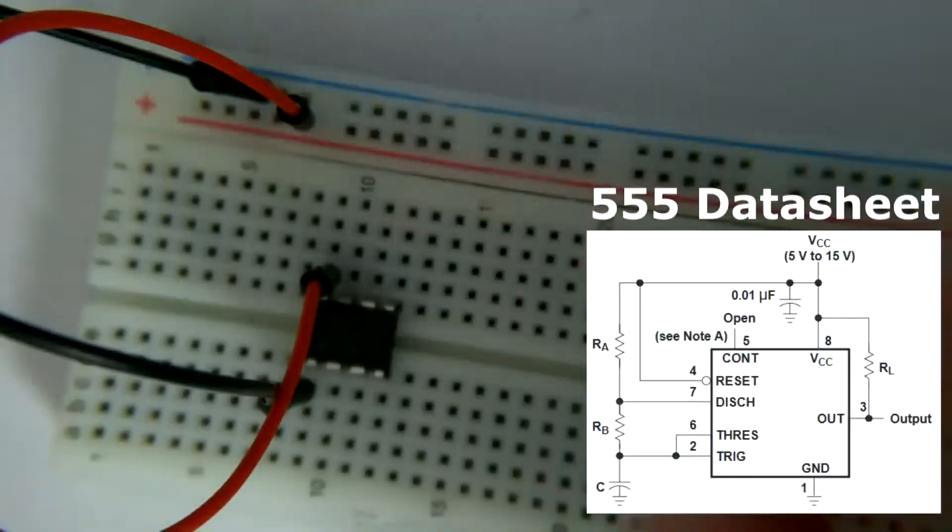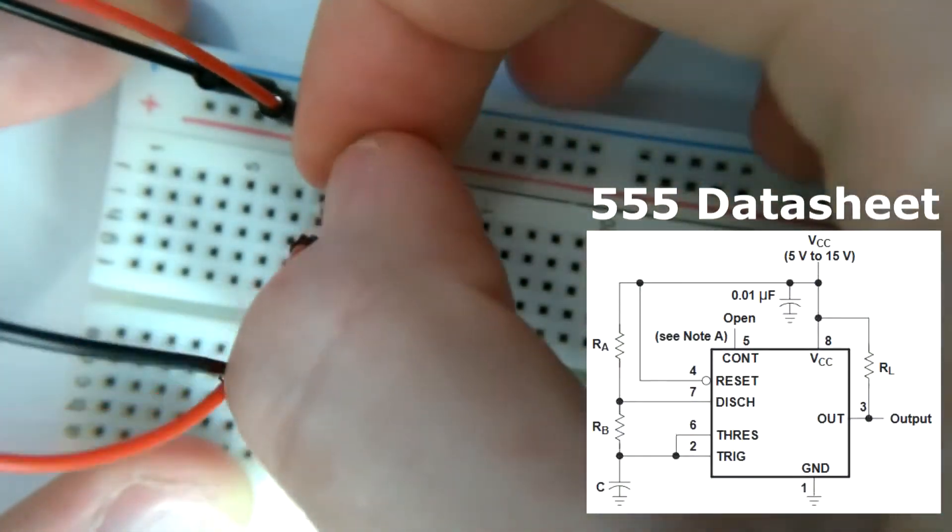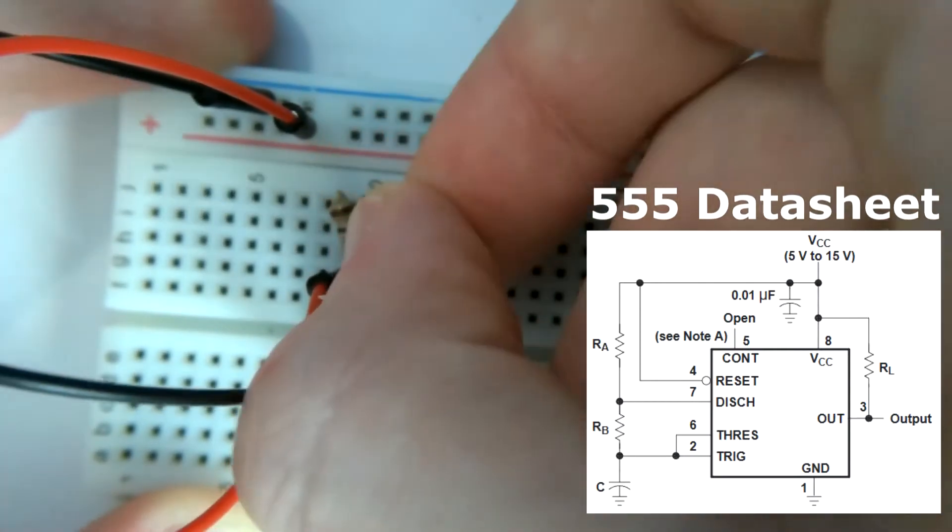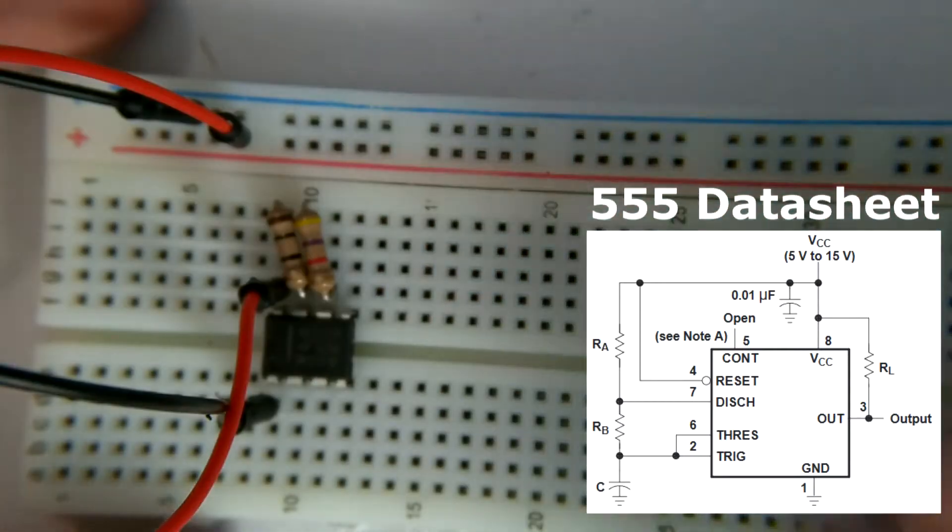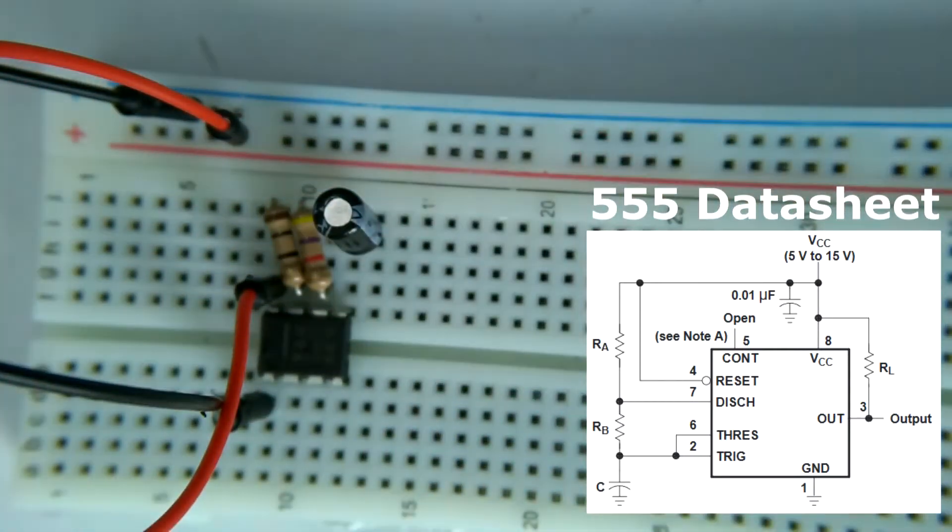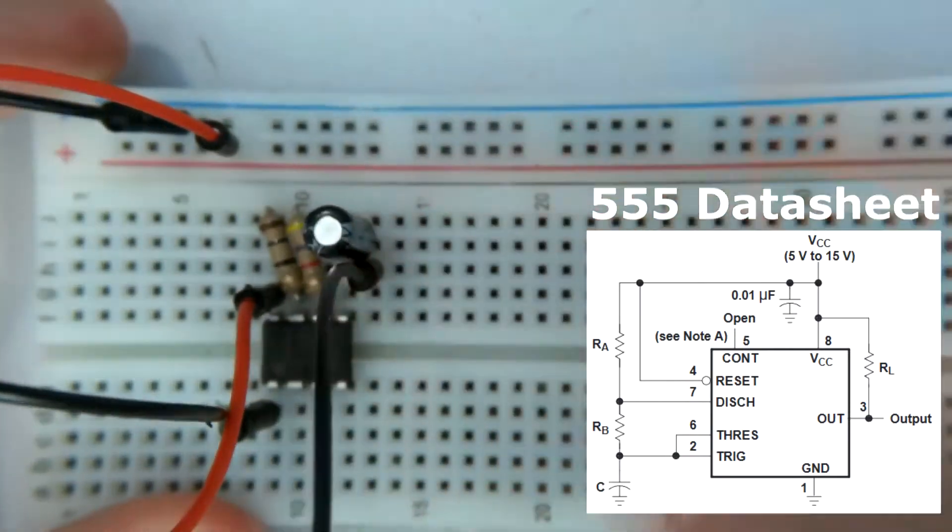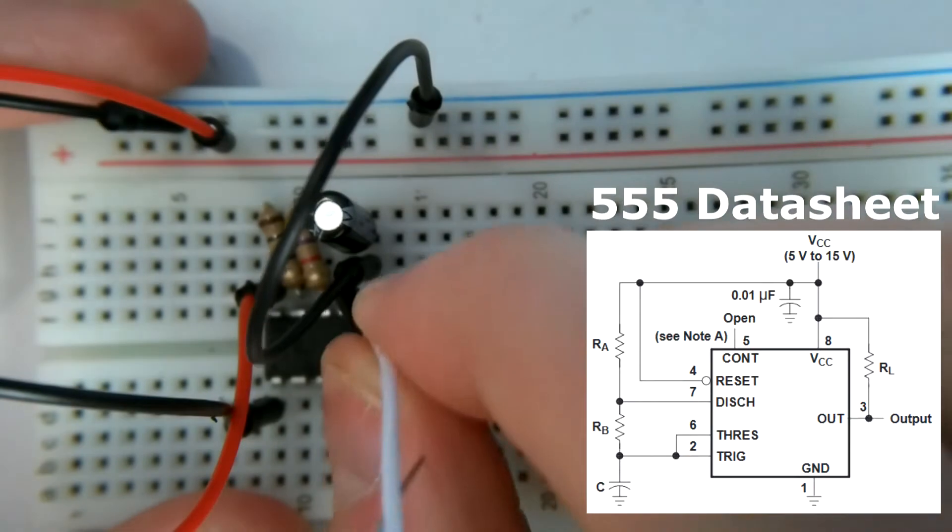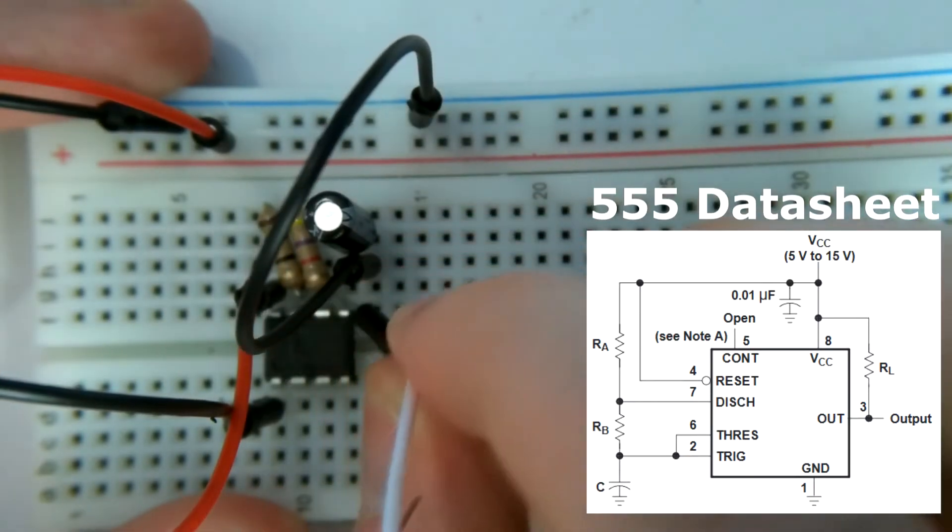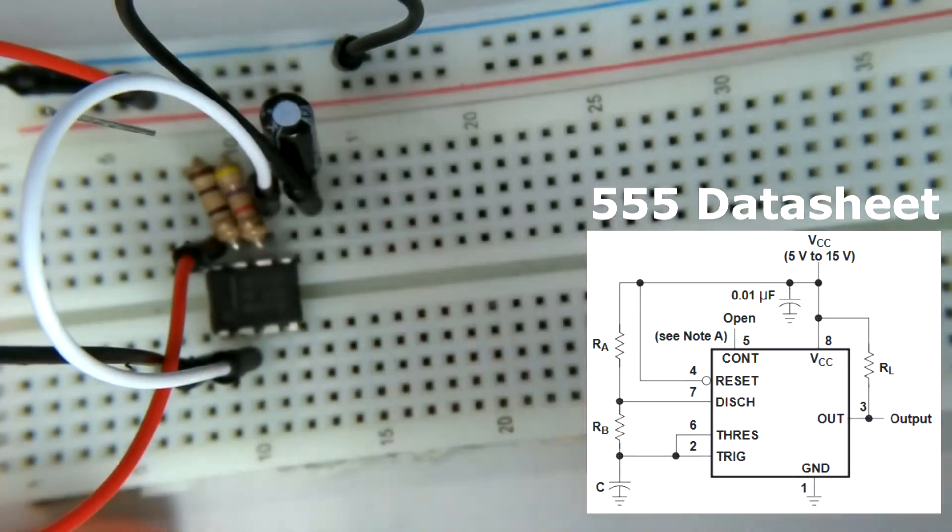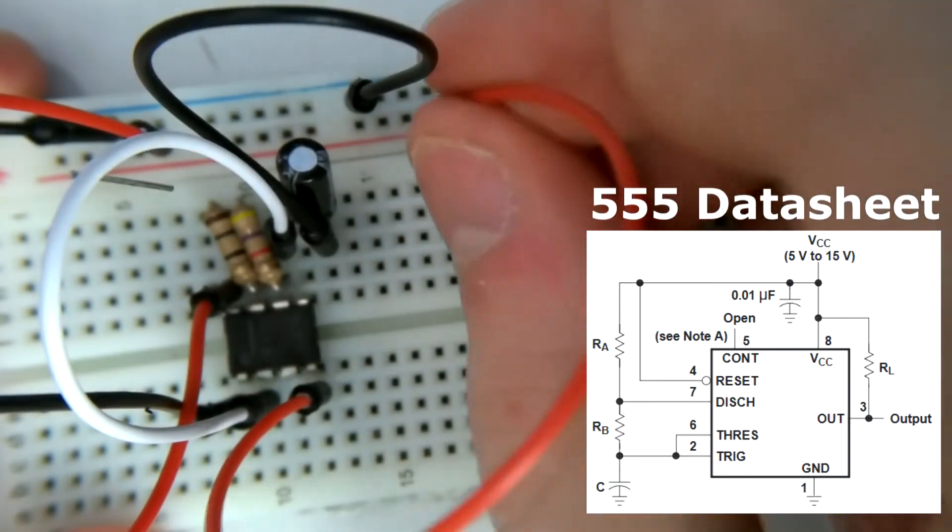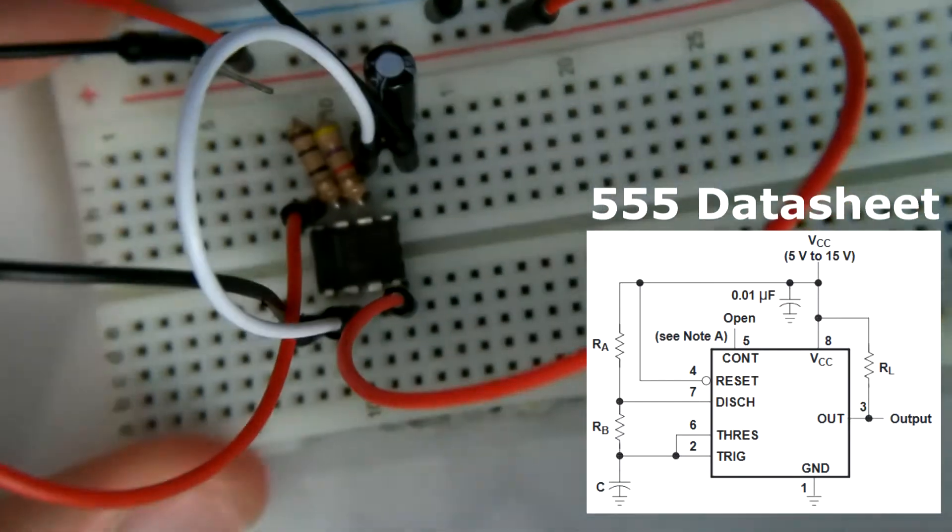First I'm going to connect the 10kohm resistor across pins 8 and 7. Then I'm going to connect the 470kohm resistor between pins 7 and 6. Then I will connect the 0.47 microfarad capacitor between pin 6 and ground. Also on pin 6, we're going to make a jumper connection between pin 6 and pin 2. Pin 5 we can just go ahead and leave open. Now pin 4, we're going to also make a jump between pin 4 and the positive power rail. And finally, pin 3 is our output.